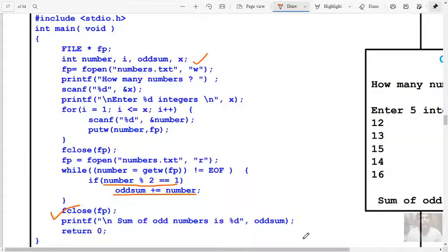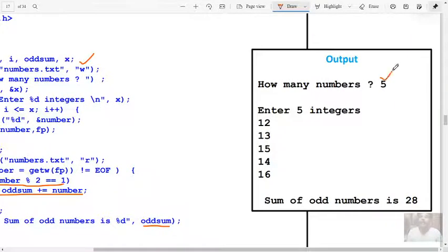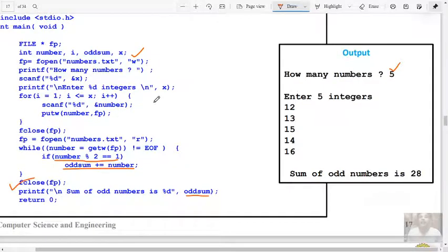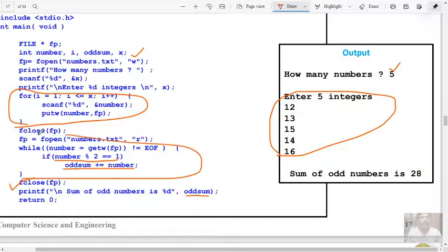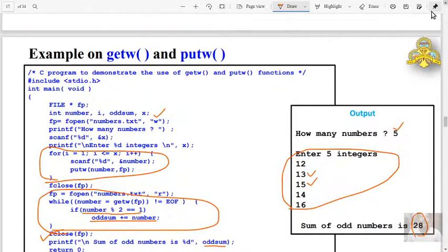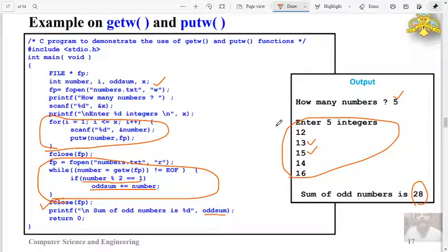In the while loop there is one if statement. If the read number from file is odd number, identified by number modulo 2 equals to 1, then odd sum plus equals number. Here is the output: 13 and 15 are odd numbers, they are added so answer is 28. This is the execution of the function getW and putW.